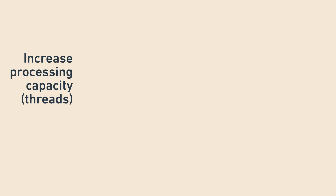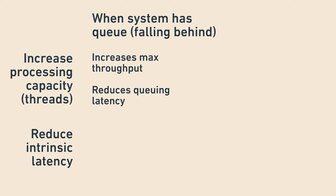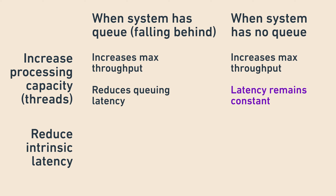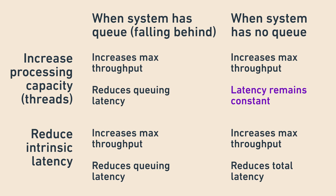To summarize, there are broadly two ways to improve the performance of a system: increase processing capacity, or reduce intrinsic latency. If a system is falling behind, increasing processing capacity increases max throughput and reduces queuing latency. If a system is not falling behind — meaning it has no queue — increasing processing capacity increases max throughput but does not affect latency. Reducing intrinsic latency, however, reduces total latency whether or not the system is falling behind.